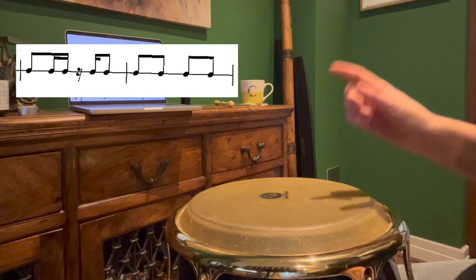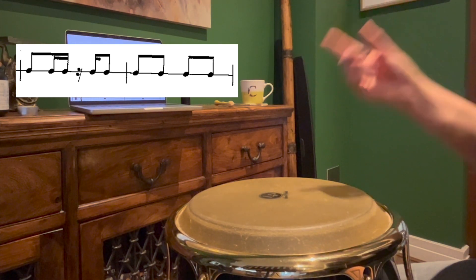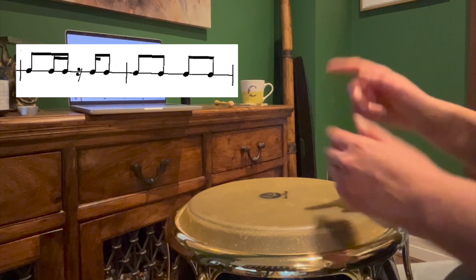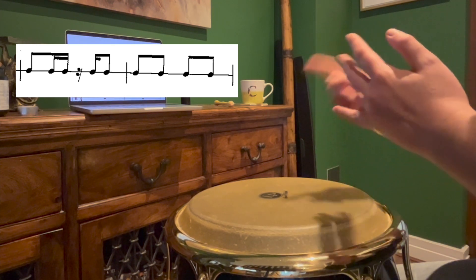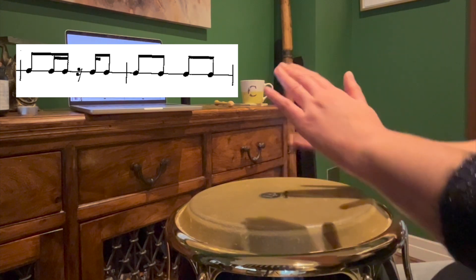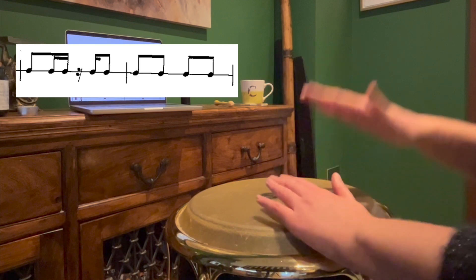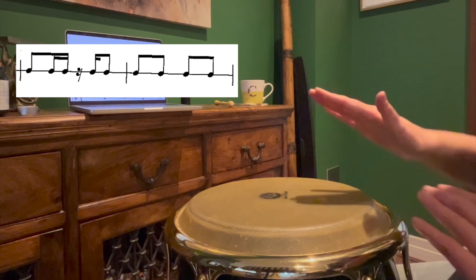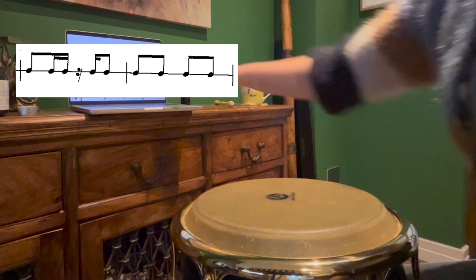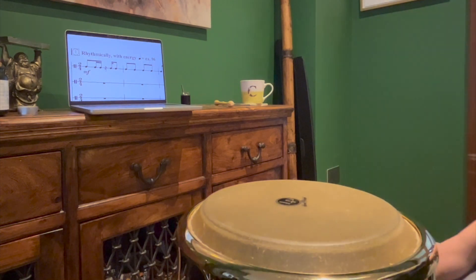I'm alternating what sticking I'm doing there, but it's up to you whichever one you choose, whichever one feels more comfortable for you. What I would say is when you land on the second bar, try to land on your dominant hand, so you'll probably end up at the end of the first bar doing a double right or double left.